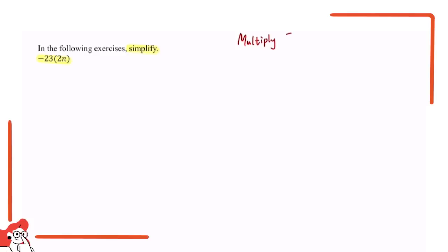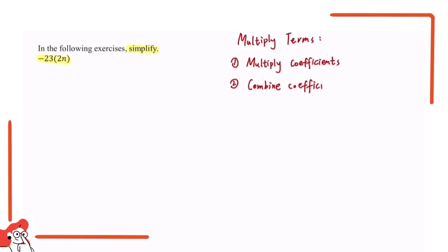For multiplying terms: when you're trying to multiply a constant value by a variable with a coefficient, the first thing to do is to multiply the constant value by the coefficient. Then you want to combine that coefficient with your variable.